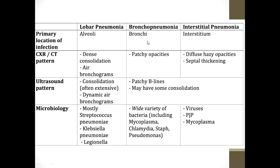Comparing lobar pneumonia, bronchopneumonia, and interstitial pneumonia: in lobar pneumonia, the primary location of infection is the alveoli; in bronchopneumonia it is in the airways like bronchi; and in interstitial pneumonia it is within the interstitium of the lungs. On chest X-ray, lobar pneumonia shows dense consolidation involving one lobe with air bronchograms visible, while bronchopneumonia shows patchy opacities.